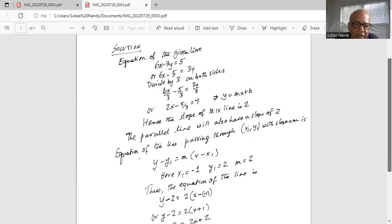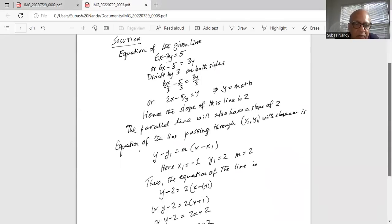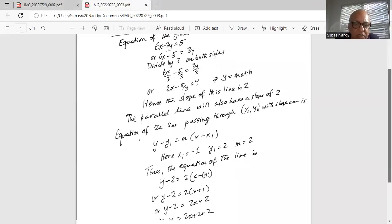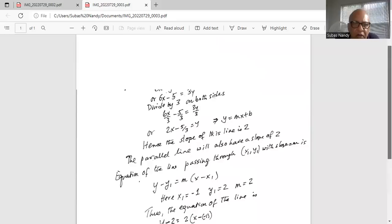So that's why I have written it like that. And then you will distribute the 2. So y minus 2 is equal to 2 times x, and then minus minus 1 becomes a plus 1, and 2 times 1 is plus 2. Then you can add 2 on both sides, and the final equation is y equal to 2x plus 4.